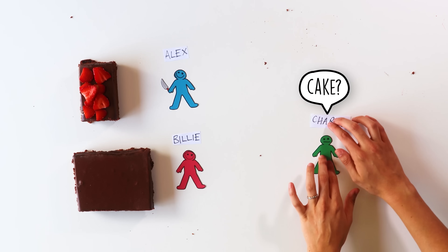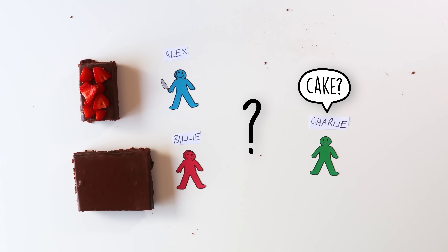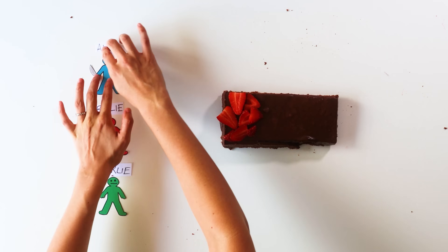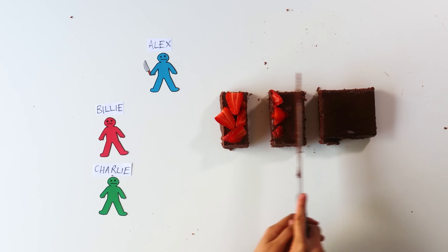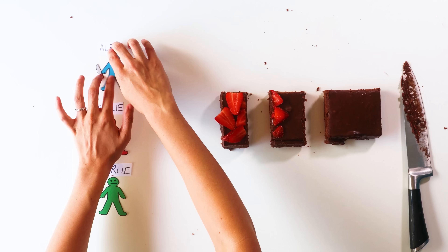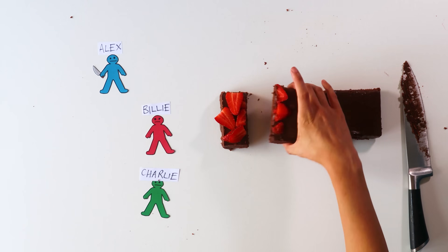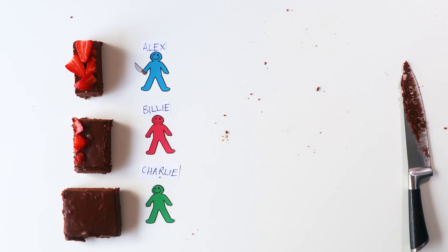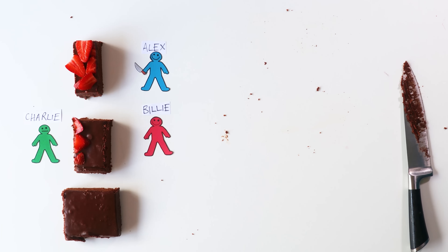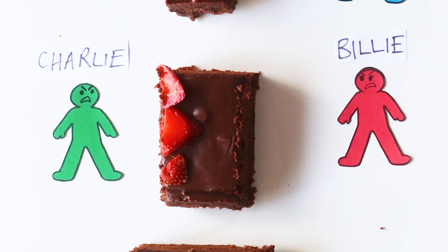Oh, look, here's Charlie. Will cut and choose work for three people? Alex cuts the cake into what he thinks are three equally valuable pieces. In the lucky situation, Billy and Charlie choose different pieces and Alex gets the remaining piece — everyone is happy. But what if Billy and Charlie both want the same piece? The cut and choose protocol doesn't have a way to deal with this conflict, so it only works for two people.